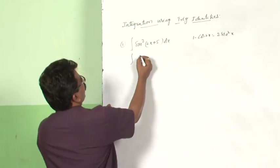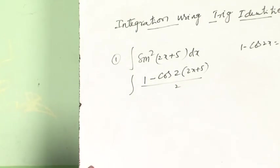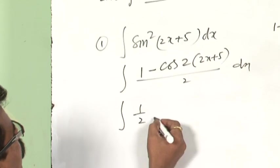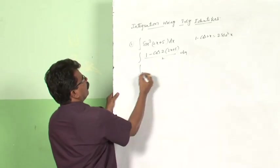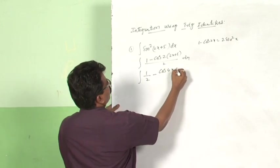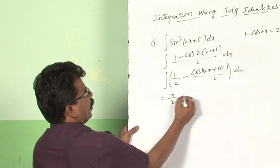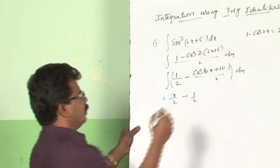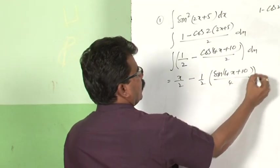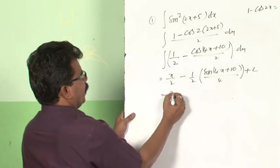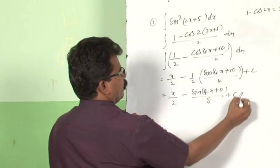This can be written as integral of (1 − cos2(2x+5)) / 2. This simplifies to integral of 1/2 − cos(4x+10)/2 dx, which further gives 1/2 − cos(4x+10)/2 dx. Integrating: integral of 1/2 is x/2, minus (1/2)·sin(4x+10)/4, because the derivative of 4x+10 is 4, plus c. Simplifying: x/2 − sin(4x+10)/8 + c is the solution.